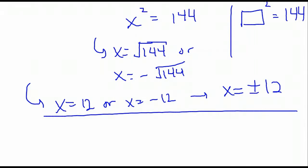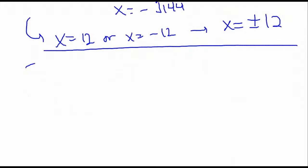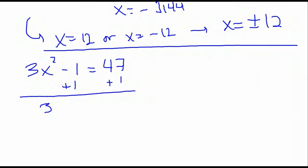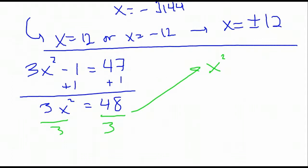For the next equation, we've got 3x squared minus 1 equals 47. Again, we want to isolate the x squared term. We don't want to put zero on one side when we're trying to use the square root method. So we're going to add 1 to both sides, and then divide by 3 to isolate the expression that's being squared. Dividing by 3, we get x squared is 16, and therefore we get our two solutions: plus or minus the square root of 16, or plus or minus 4.